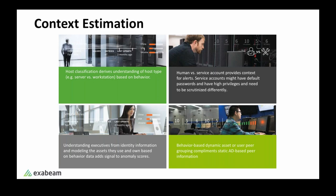We also need to know whether assets belong to executives so we can pay more attention to them, or if a user accessed an asset for the first time — which is probably not anomalous if we know the user's peers have accessed the same asset before. All this contextual information — host type, account type, executive assets, and user peer grouping — is not always readily available in enterprise IT environments, which are very complex with lots of uncertainties and ill-defined data sets. This is where machine learning can be used to dynamically estimate this contextual information.